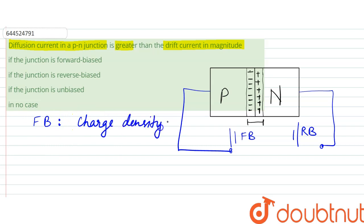increases. So diffusion increases, diffusion current increases. And hence, if the junction is forward biased, in that situation we have the diffusion current to be greater than the drift current in magnitude. So option A is the correct answer. Thank you.